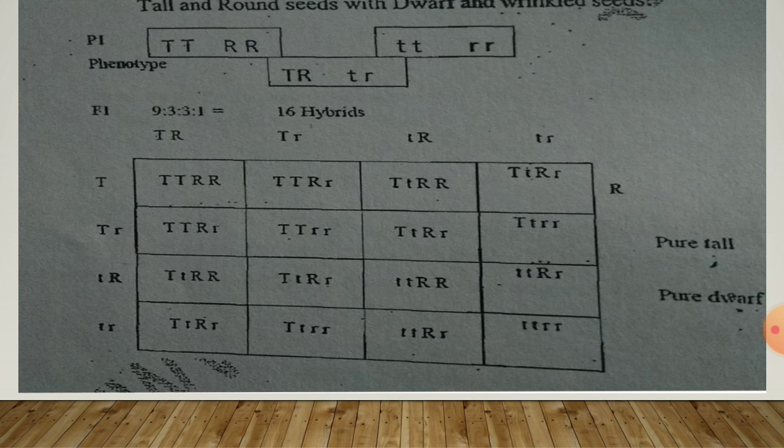The phenotypic ratio is 9:3:3:1, giving 16 hybrids. The genotypic ratio is 1:2:1:2:4:2:1:2:1. On the basis of similar results in several dihybrid crosses, Mendel proposed a fourth postulate called the law of independent assortment.